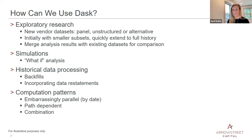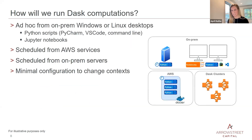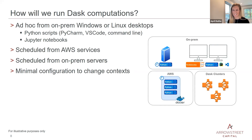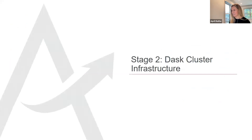Out of these three use cases emerge three computation patterns: those that are embarrassingly parallel and easily partitioned by constructs like date; those that are path-dependent, requiring the output of the previous task as input to the next; and processes that combine these two together. We also wanted to run computations from our desktops using PyCharm, VS Code, or notebooks, as well as from scheduled or systematic processes on AWS or on-premises servers — with minimal code changes required to switch between those contexts.